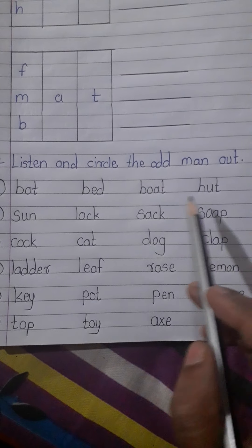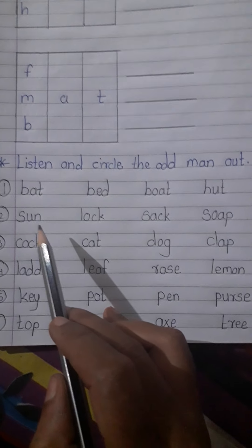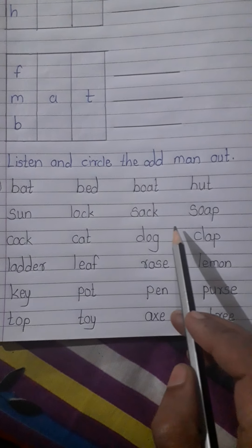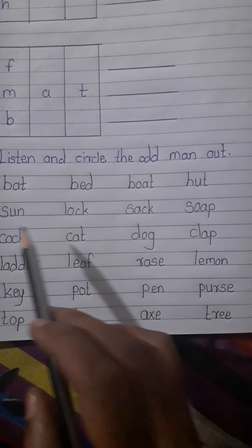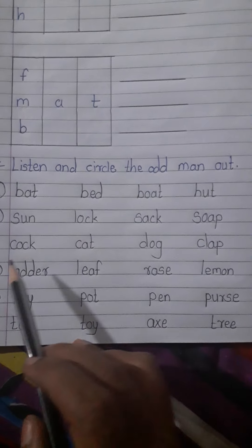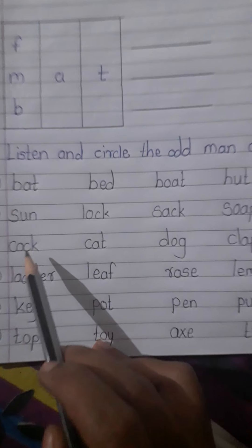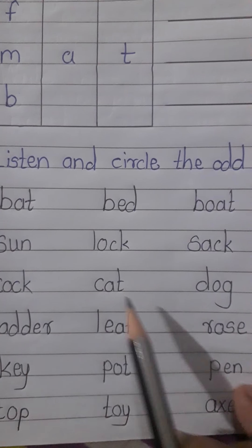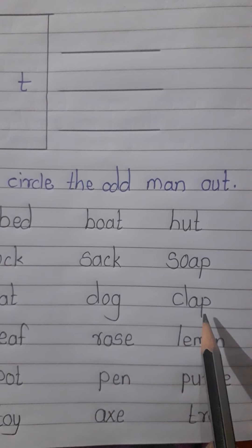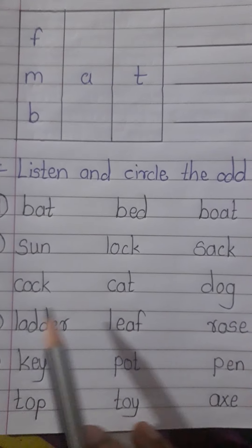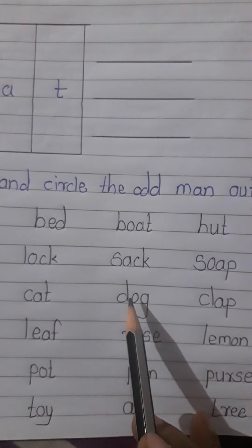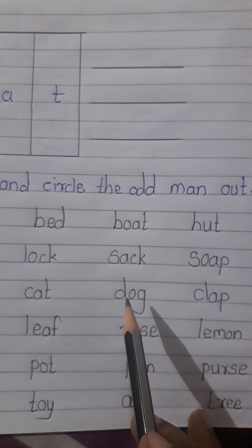Here is also: S-U-N sun, L-O-C-K lock, S-A-C-K sack, S-O-A-P soap. Which is the odd one? Very good — L-O-C-K lock! Then the next one: C-O-C-K cock, C-A-T cat, D-O-G dog, C-L-A-P clap. Which one is odd? Very good — dog! Dog is the different word, so circle the dog.